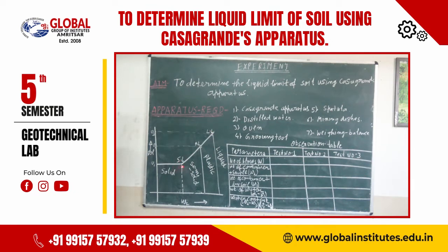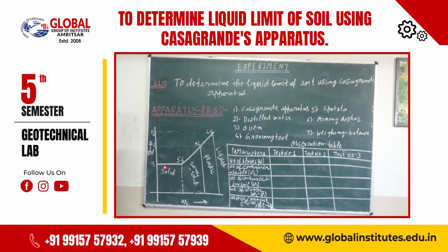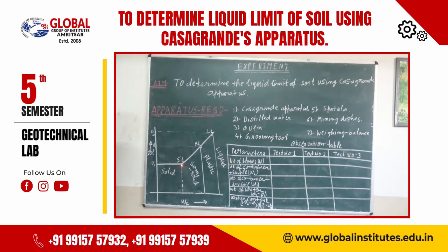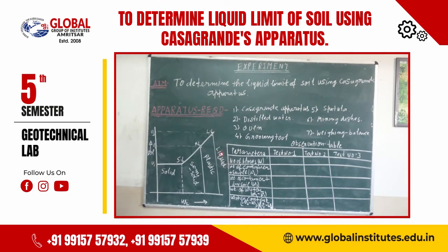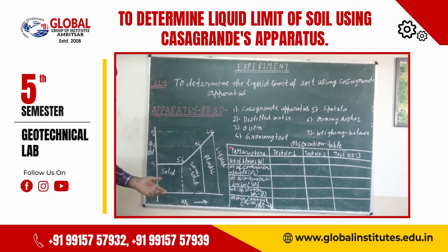The soil before the shrinkage limit is in a solid state. Just after the shrinkage limit, the soil is in a semi-solid state. Soil just after the plastic limit is in the plastic state. Similarly, soil just after the liquid limit starts behaving like a liquid, meaning its shear strength is very much reduced.